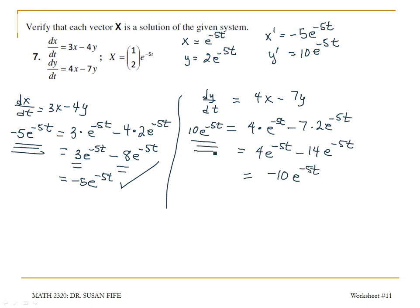That's not equal to 10e to the negative 5t. So maybe it isn't a solution.